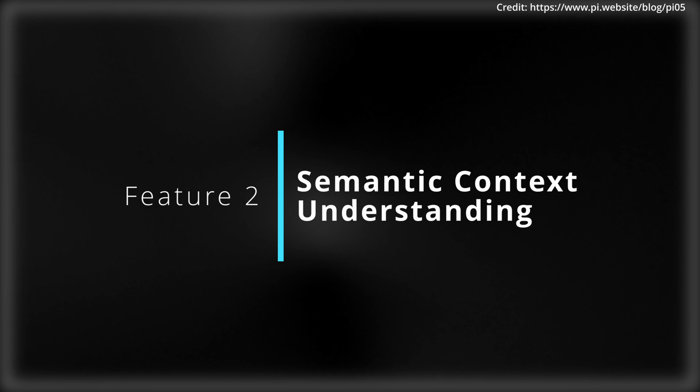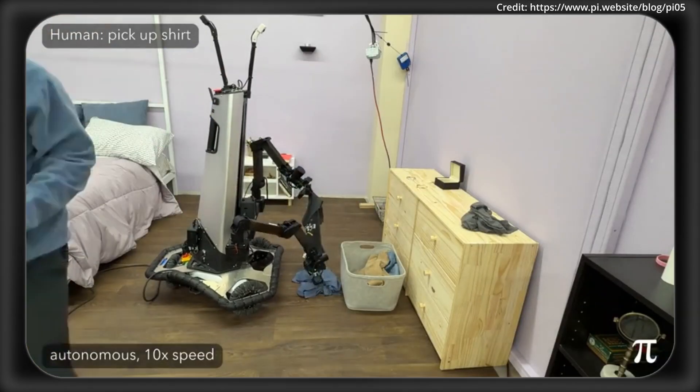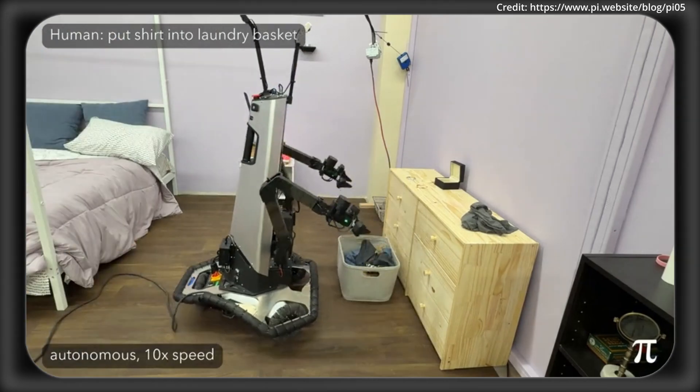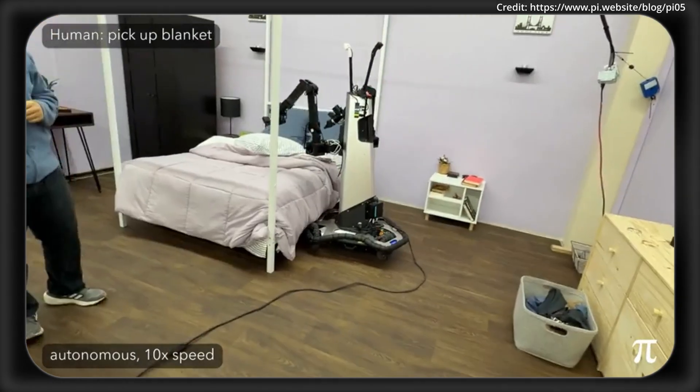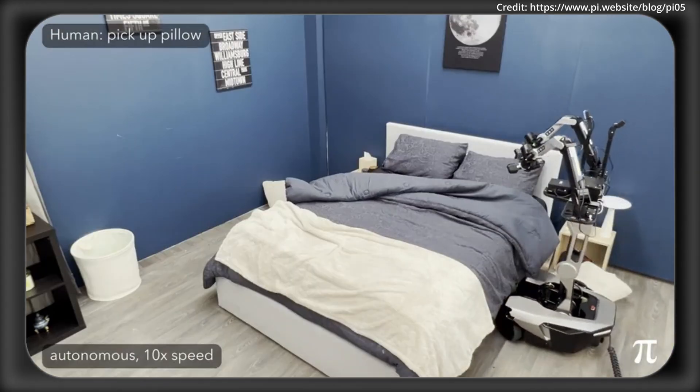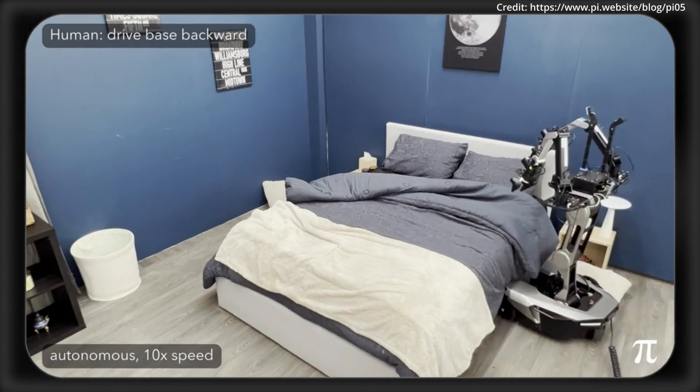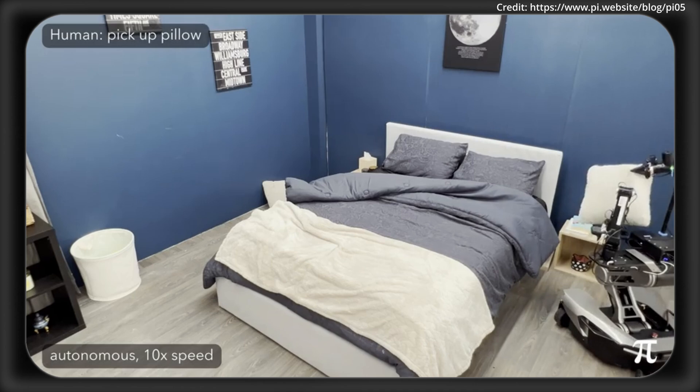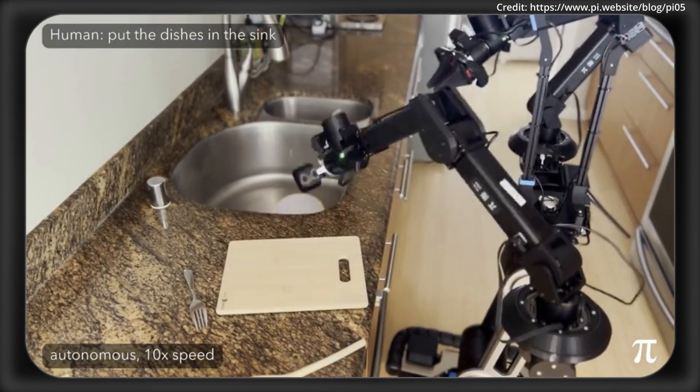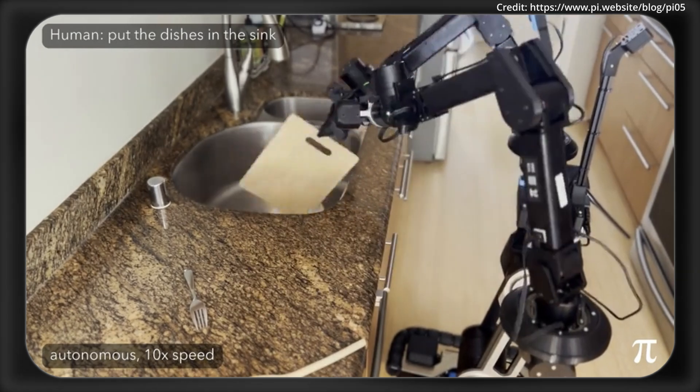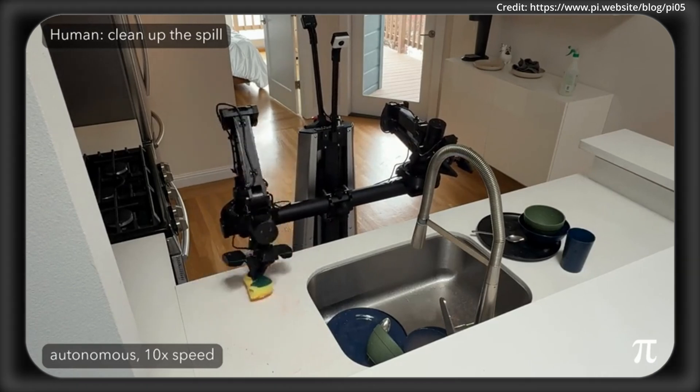And this is where Pi.5 doesn't just follow orders but it actually thinks about what they mean, meaning that it can infer high level structures of a task and then it can break it down into steps. For instance, making a bed involves picking up a pillow, then smoothing the sheets and fluffing the blankets etc. And this semantic know-how lets the robot decide exactly where to put objects like dirty dishes belonging inside of a sink instead of a fridge, or it can infer what tools to use for a task. For instance, picking up a sponge for a spill. It's like giving the robot a mental checklist for each chore.